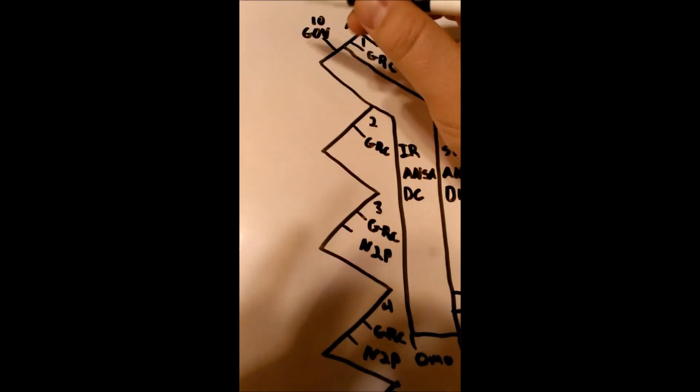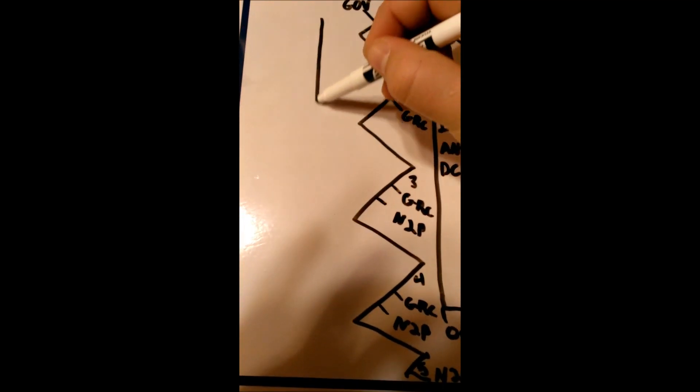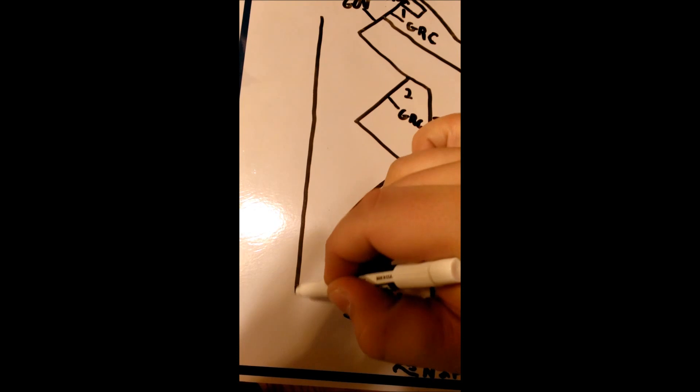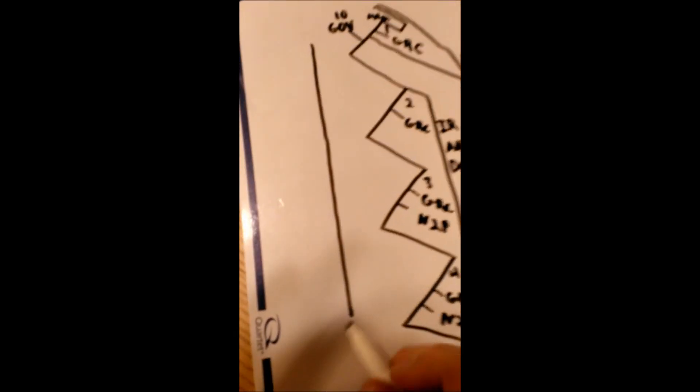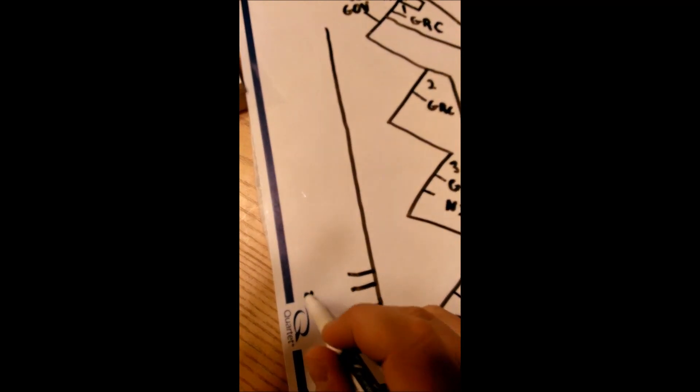And then after that we'll draw the spinal accessory. And it's going to come straight down at the bottom three branches that connect to the trapezius.